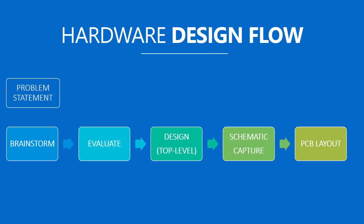Now you have a problem statement in hand — like you want to control the appliances at your home with a remote control. This is an input to the brainstorm stage. The objective here is to generate as many concepts as possible to achieve what we want to do. For example, we can control the appliances with an IR remote, design an RF-based remote, or even use Wi-Fi and control them using Android phones. This activity is ideally done with a group of specialists to have different perspectives on each concept.